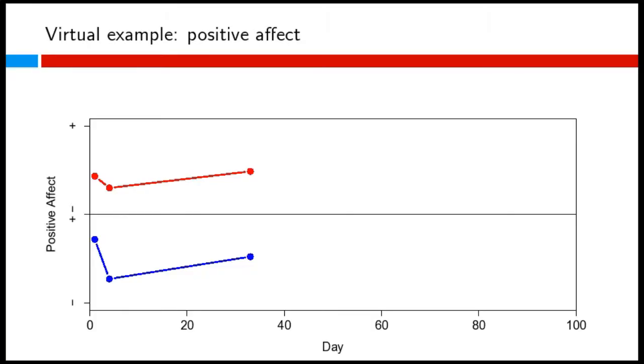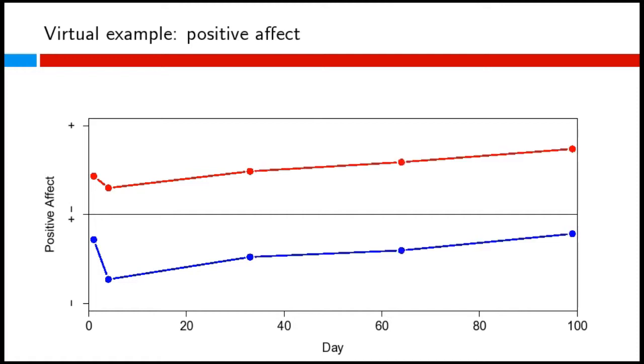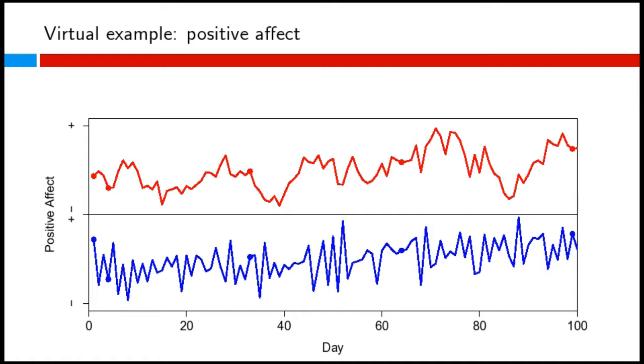I'll show the fourth point with an example. I have two simulated persons here — a red one and a blue one — and I measured their positive affect on day one, day two, and day ten. I simulated these persons so they have exactly the same mean, the same variance, and the same trend — so they look essentially identical. With only a few measurements you still don't see a lot of difference.